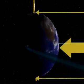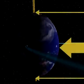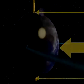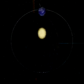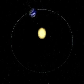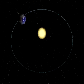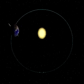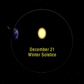This is shown in the side view, where the sunlight strikes the equator directly and the poles equally. Around December 21st, we reach the winter solstice.